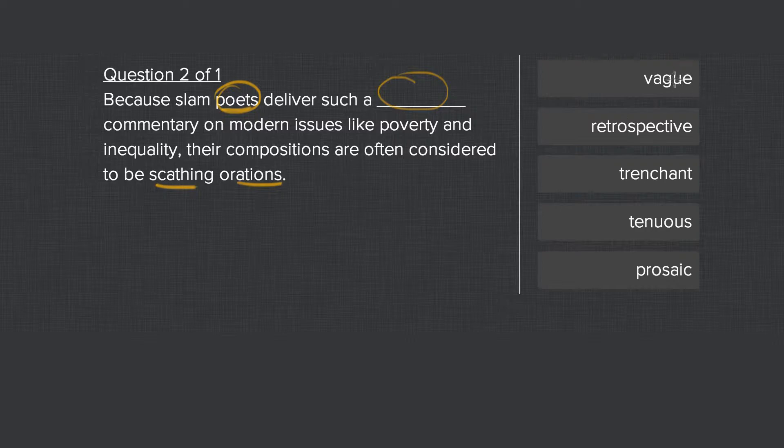Now, vague means not quite clear. So you wouldn't call something that's unclear to be a scathing oration. Retrospective means a look back. So that's just totally inappropriate.